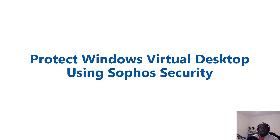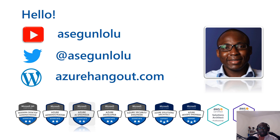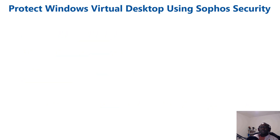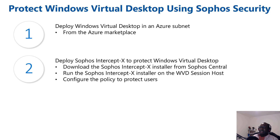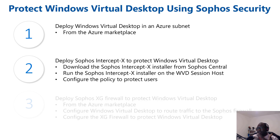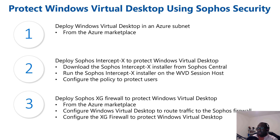My name is David Okiode and I'm a cloud security architect. I specialize in security of cloud platforms like Azure, AWS, and Google Cloud. In the last video I showed deployment of Windows Virtual Desktop in an Azure subnet and the deployment of the Sophos Intercept X agent. Now we'll add another layer of defense by deploying the Sophos XG Firewall to protect WVD.